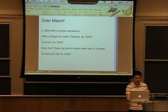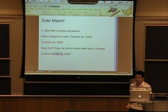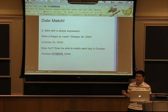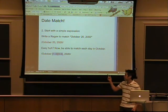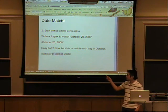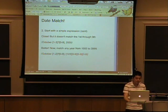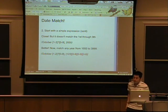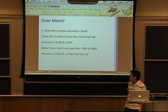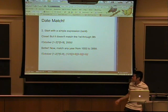Okay, now we want to modify it to match each day in October, so we can add this. Now there's something wrong with this which I'll go over in the next slide, but basically what we're trying to do here is we're going to match a 1 to a 3 and 0 to 9 as the second digit.